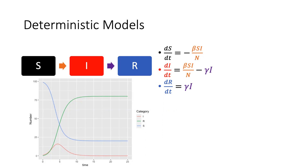DS over DT means the change in the susceptible compartment over a tiny, tiny change in time. And that's going to be negative because, as you see from the susceptible compartment, there's only an arrow going out. There's no arrows going in. Arrows going out are negatives. And that orange arrow going out from susceptible to infectious, we say, is beta SI over N.